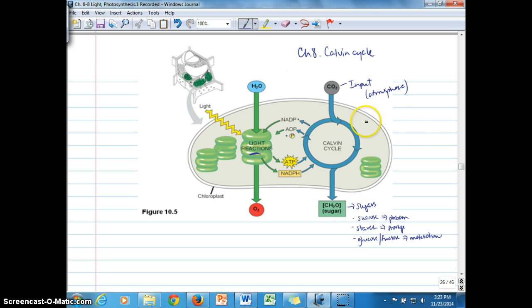Also remember that the Calvin cycle occurs in the stroma, and we'll be looking at the various intermediates that are parts of the Calvin cycle, as well as the enzymes that help regulate it.